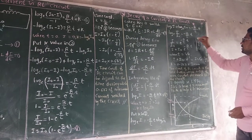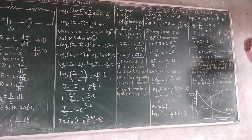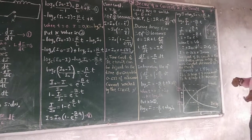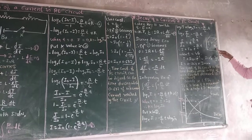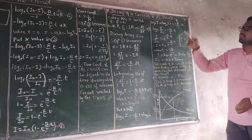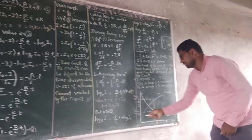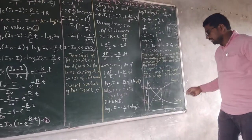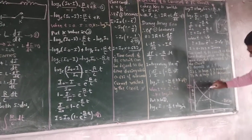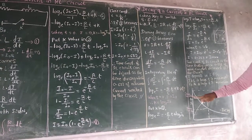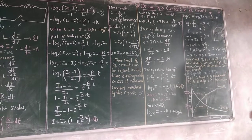The time constant for the RL circuit depends only on L and R — inductance and resistance. When L is maximum, the time constant is maximum (directly proportional). When R is maximum, the time constant is minimum (inversely proportional). Graphically, the growth of current rises to I₀ × 0.632, and the decay of current falls to 0.368 I₀.